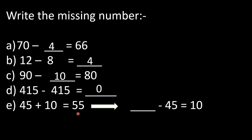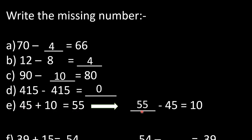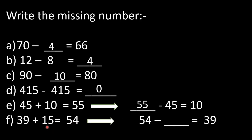In part E: 45 plus 10 is equal to 55, and dash minus 45 is equal to 10. This shows the relationship between addition and subtraction — the missing number is 55, because 55 minus 45 gives 10. In part F: 39 plus 15 is equal to 54, so 54 minus dash is equal to 39. The missing number is 15, so we write 15 here.